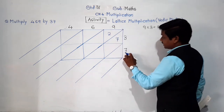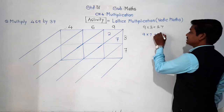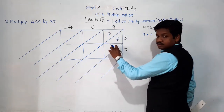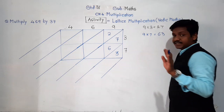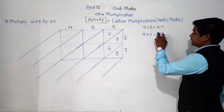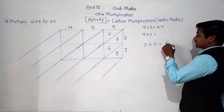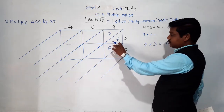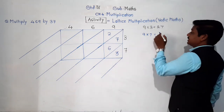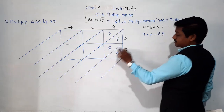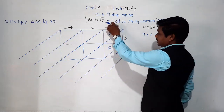Now 9 × 7 = 63. We go to this box and write 63: 6 in the upper part and 3 in the lower part. If a product is a single digit, for example 2 × 3 = 6, we write 0 in the upper part and 6 in the lower part. So multiplication by 9 is now complete.